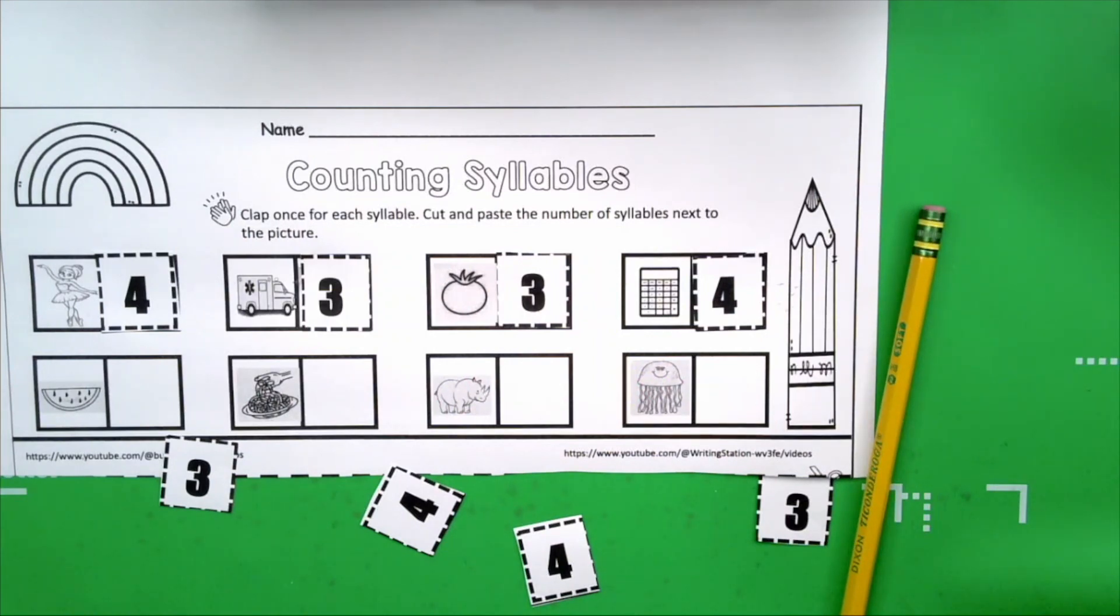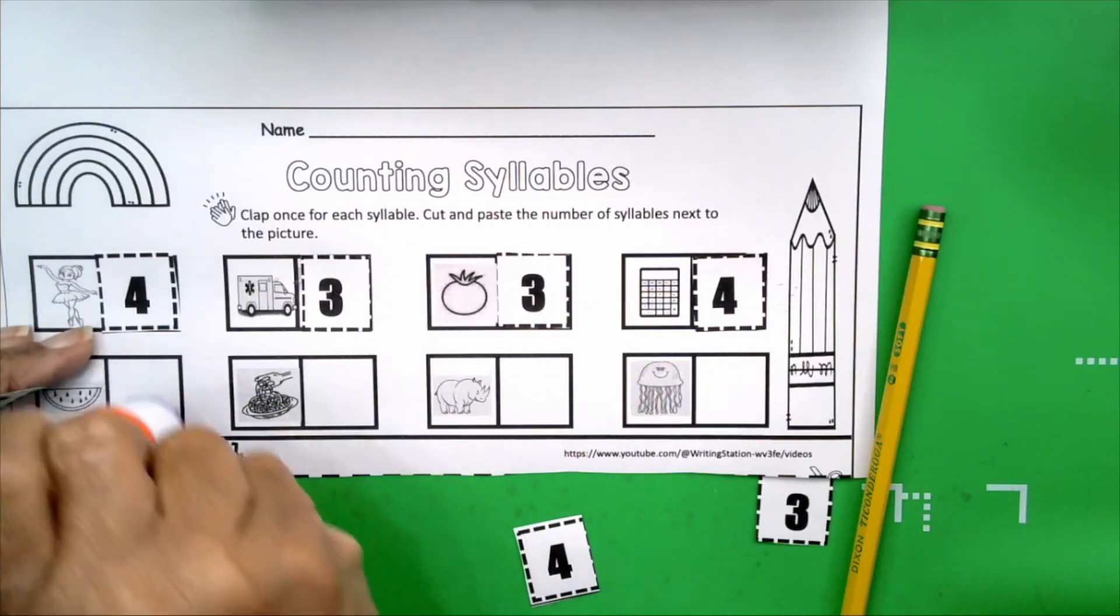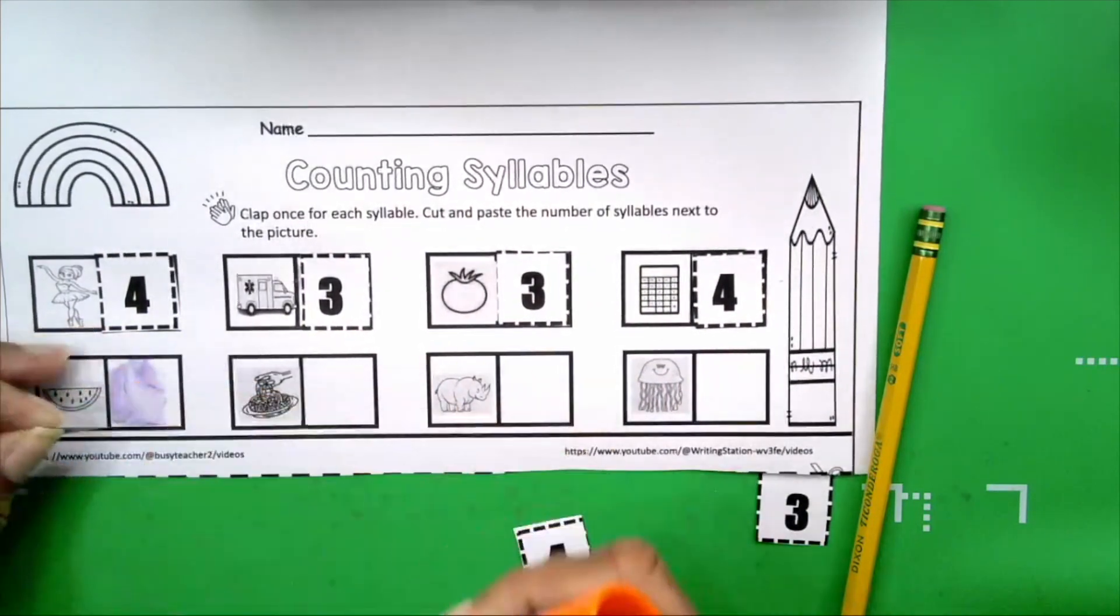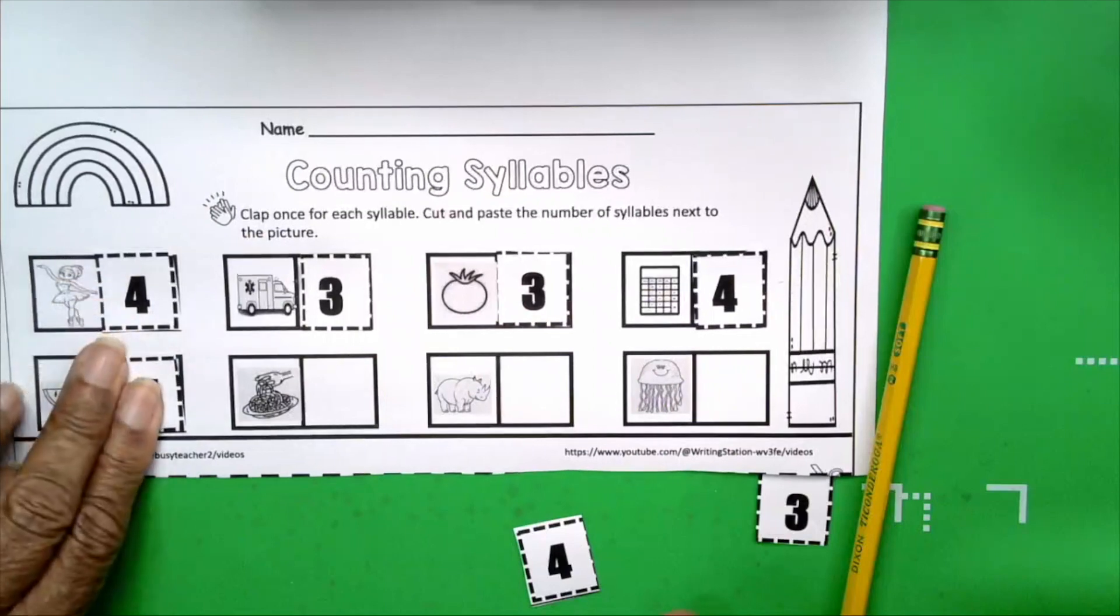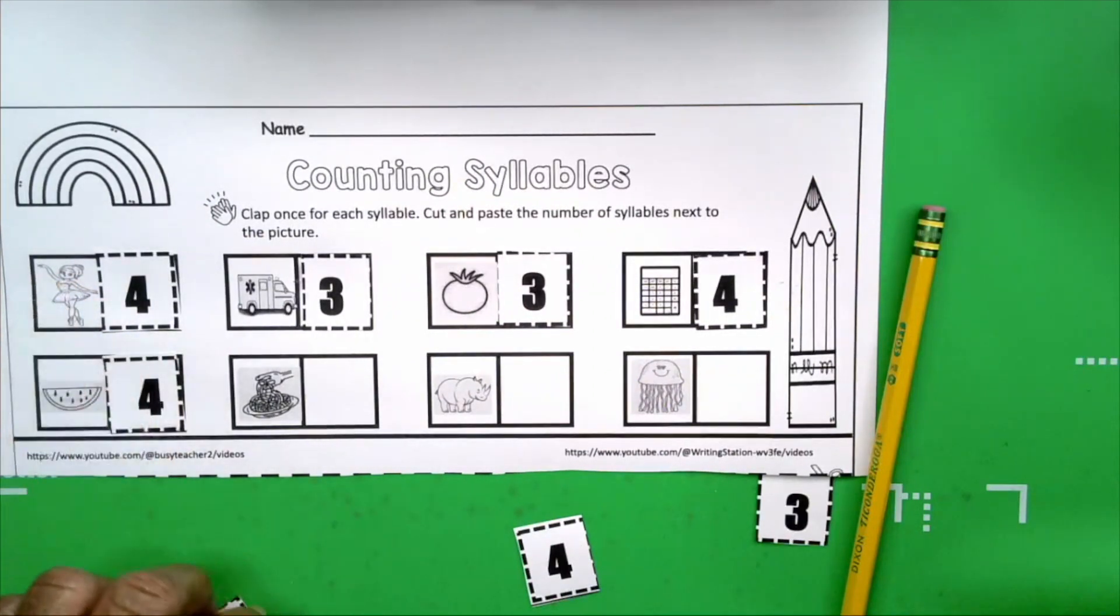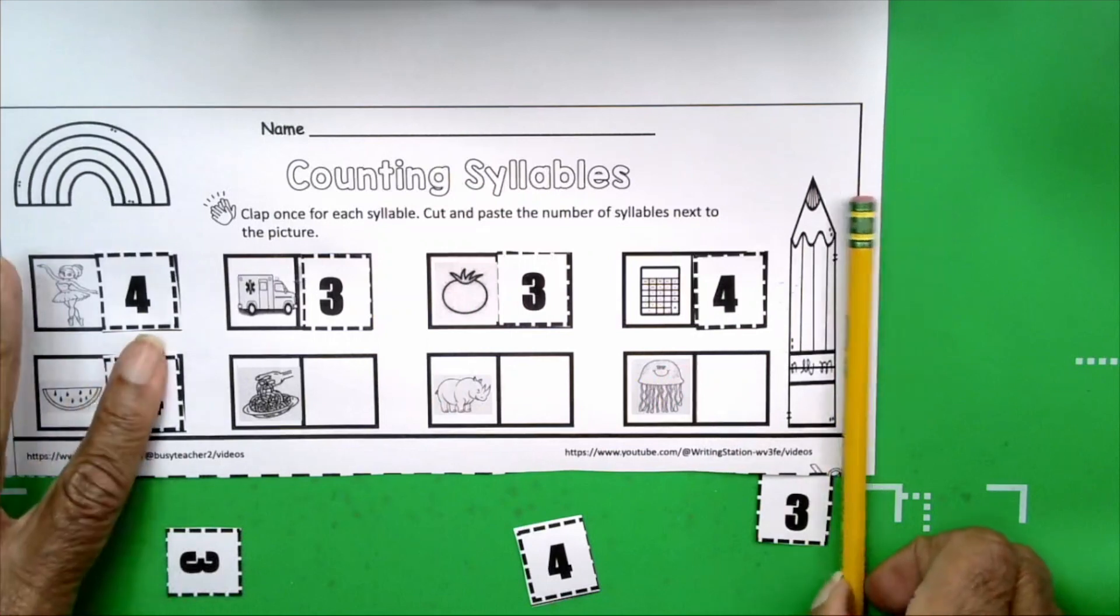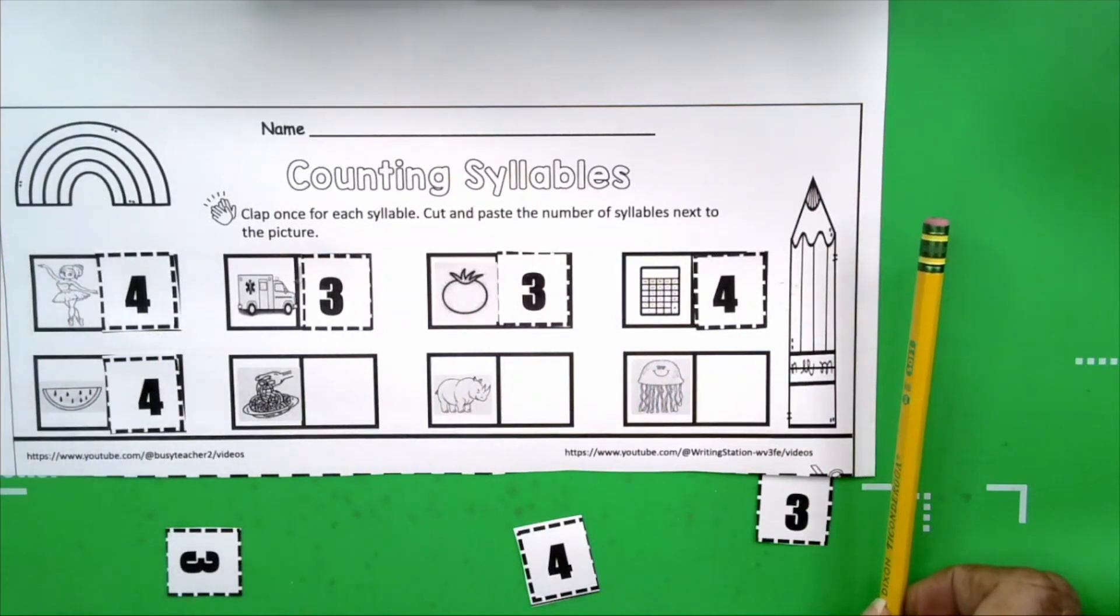How many claps. Let's do it again. Watermelon. How many claps? Four. Four claps. Four syllables. Three claps. Three syllables. Two claps. Two syllables. One clap. One syllable. Let's move on.